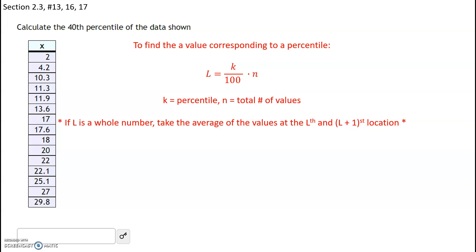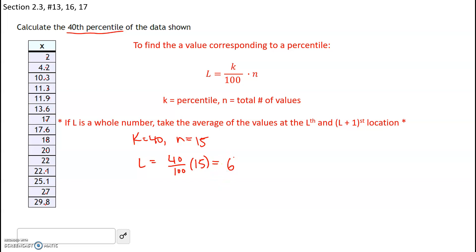Here we want to find the 40th percentile of the data shown. The formula for the locator index is k over 100 times n, where k is a percentile and n is the total number of values. In this case we want to find the 40th percentile, so our k is going to be 40. Counting the values, we have 15 values. So our locator index is going to be 40 divided by 100 times 15, and that gives us 6.